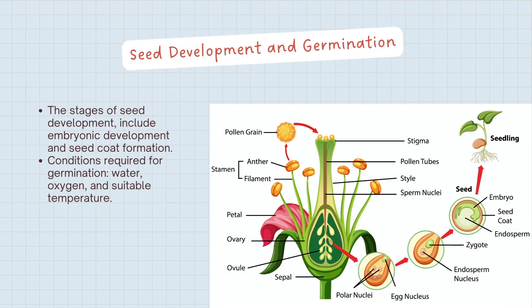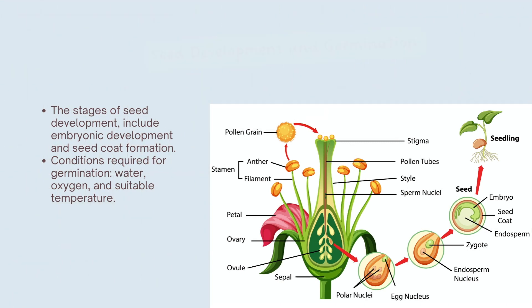Seed development is a fascinating process. After fertilization, the zygote undergoes embryonic development within the seed. Meanwhile, the seed coat forms, providing protection. When conditions are favorable — such as the presence of water, oxygen, and suitable temperature — the seed germinates. This marks the beginning of a new plant's growth.